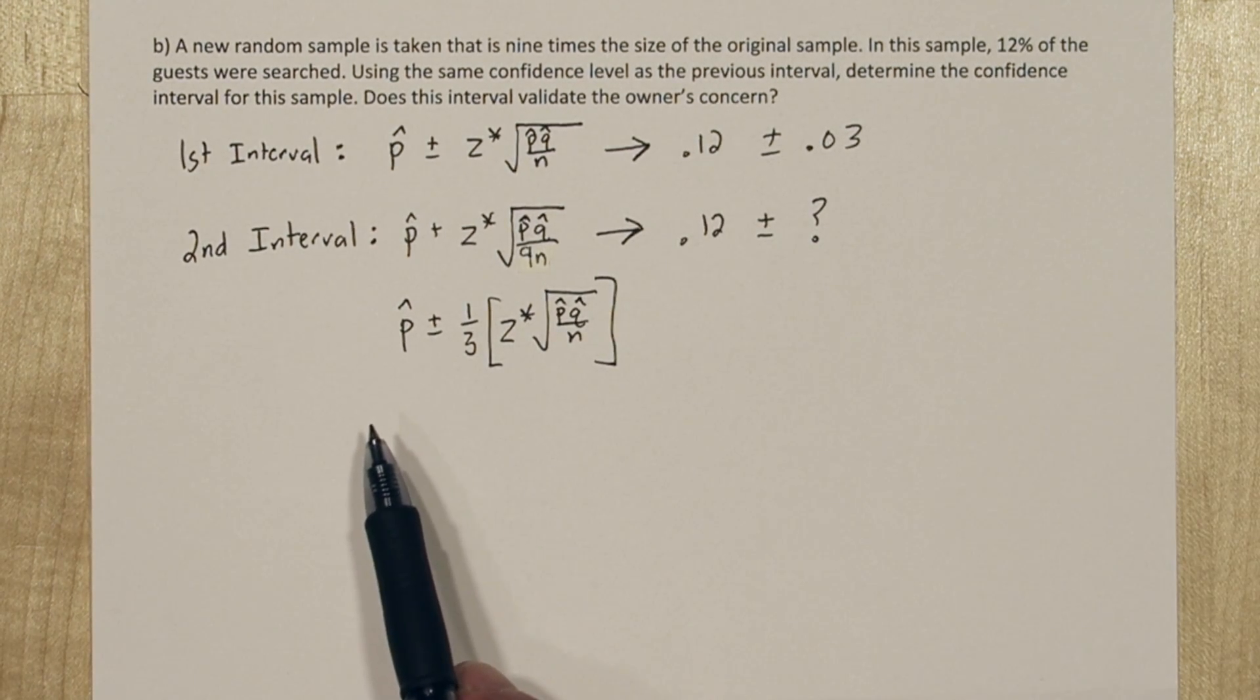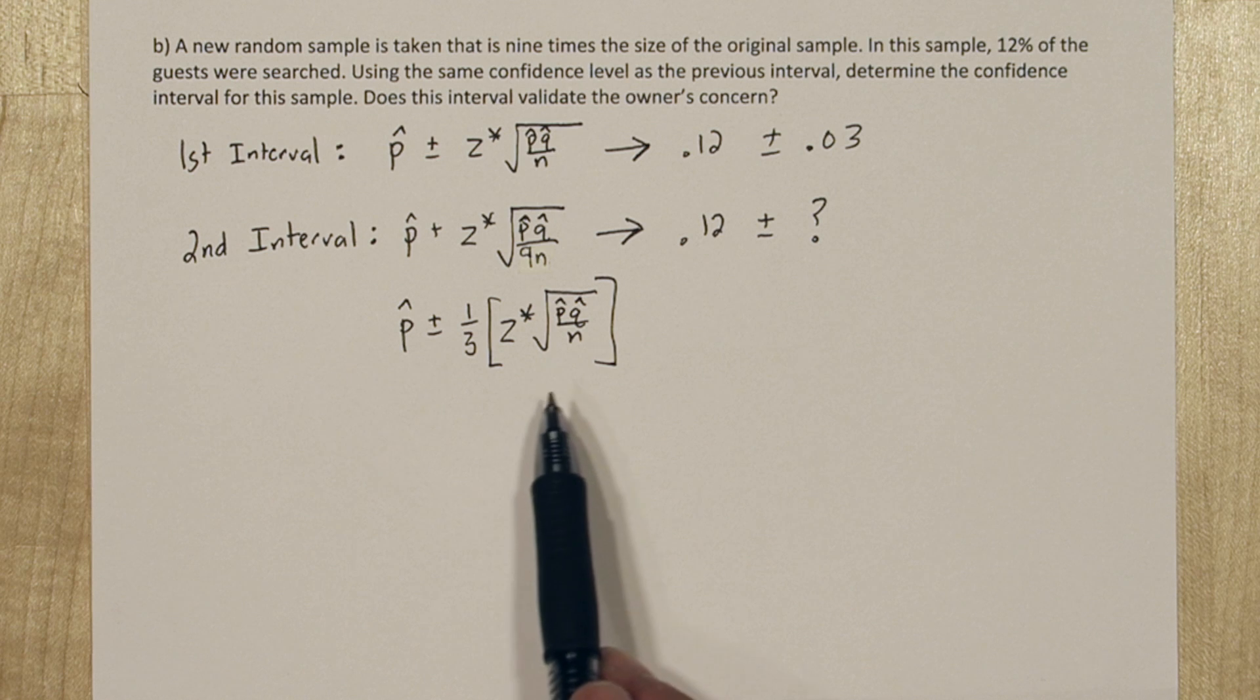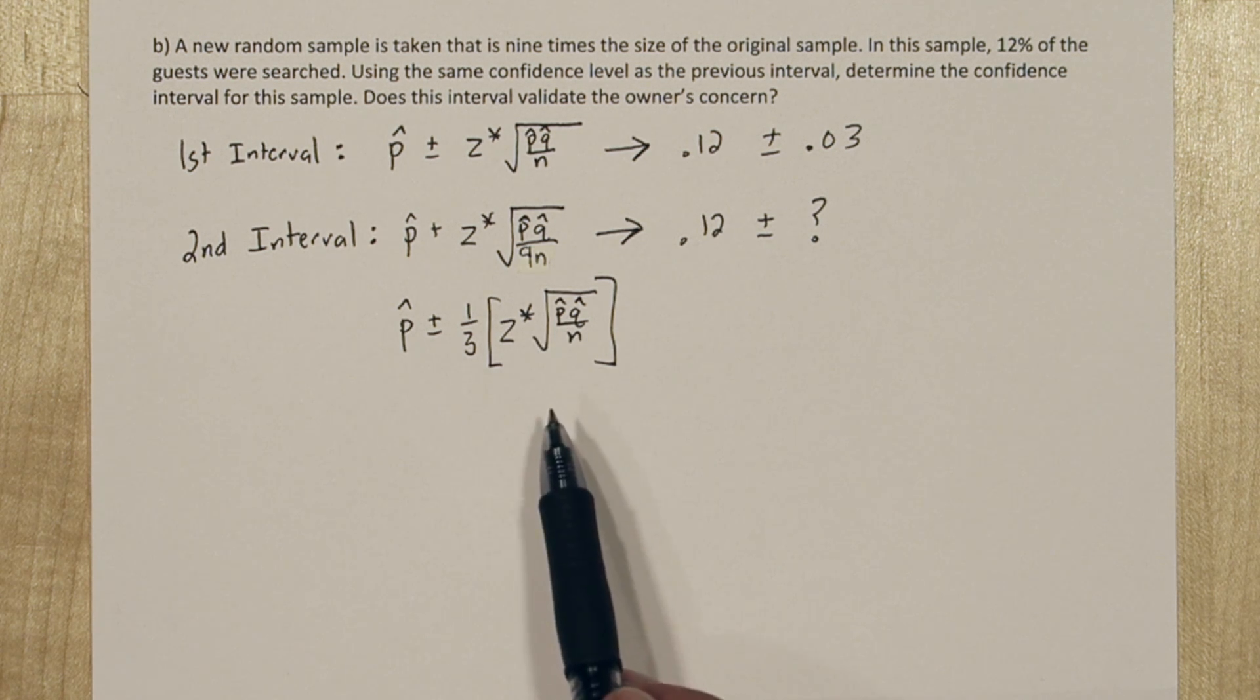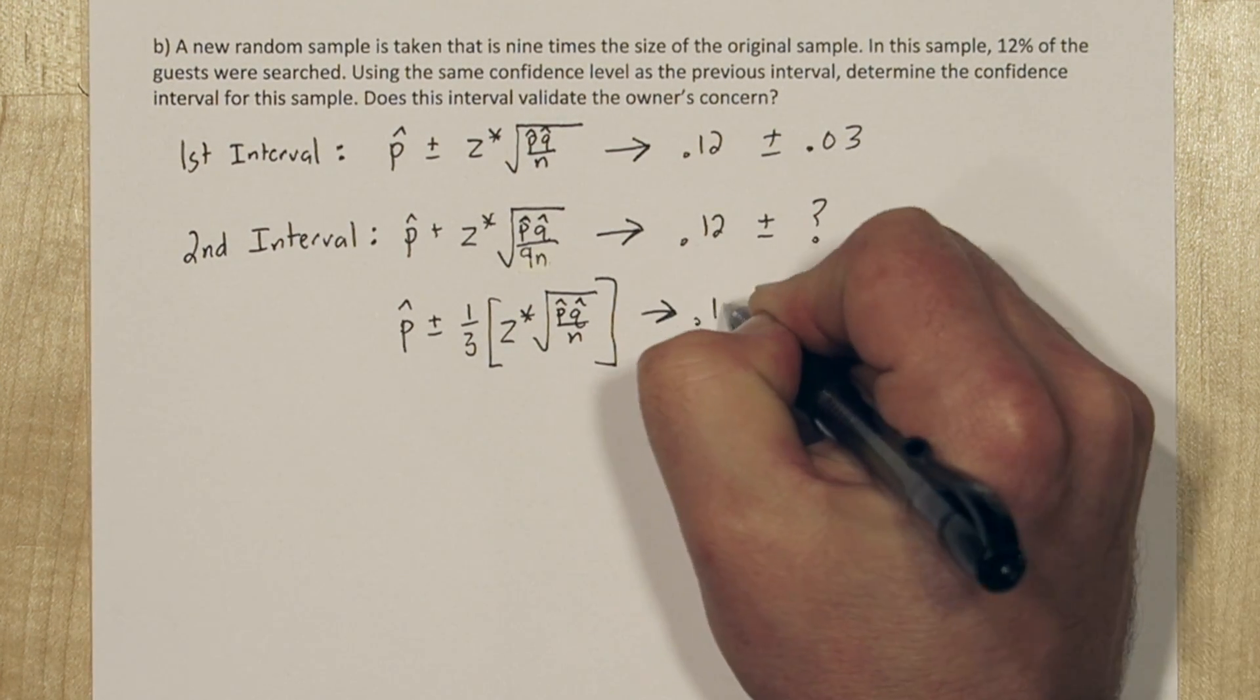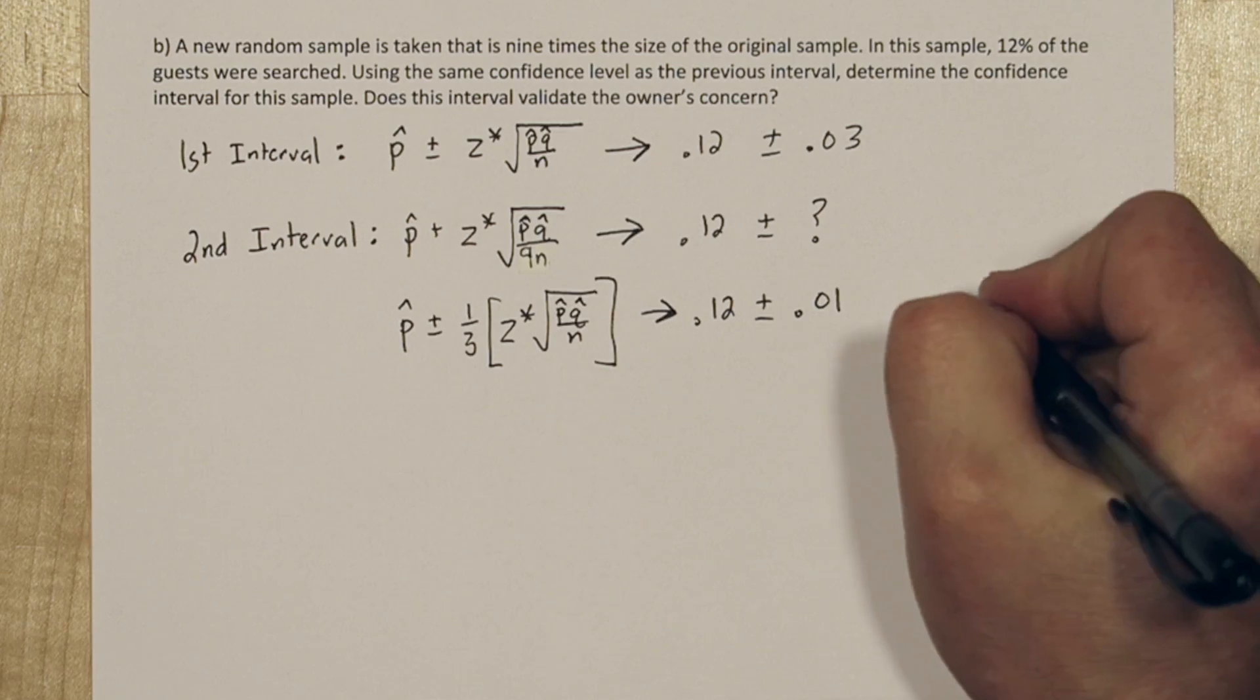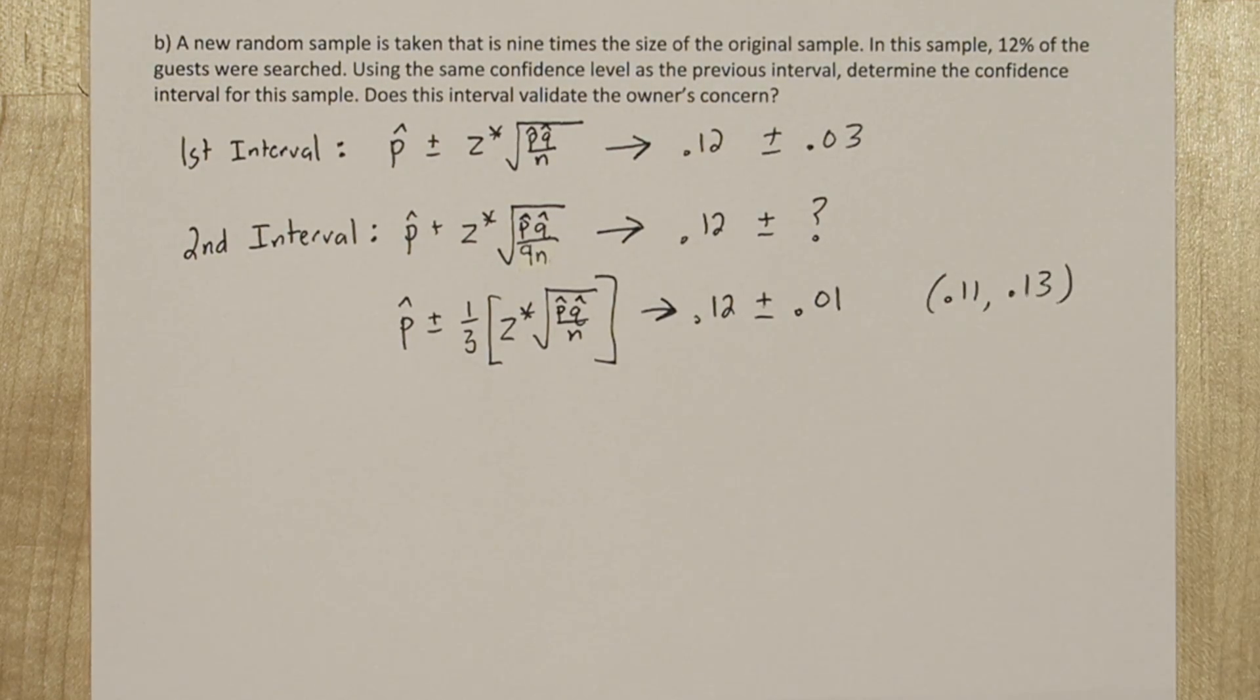So it's our point estimate, plus or minus 1 third of our original margin of error. Since our original margin of error was 0.03, 1 third of it is 0.01. So our interval is 0.11 to 0.13.